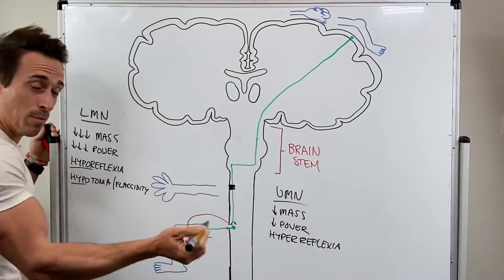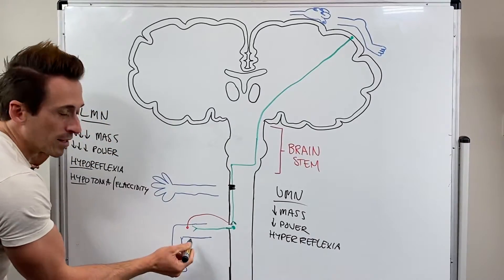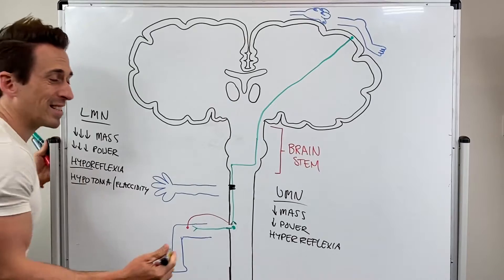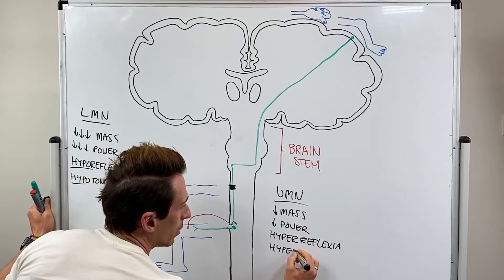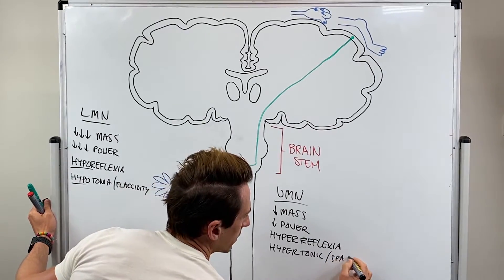Now, again, because there's no inhibition here, what happens is this neuron is going unchecked and this muscle becomes hypertonic. This is also known as spasticity, hypertonic, again also known as spasticity.